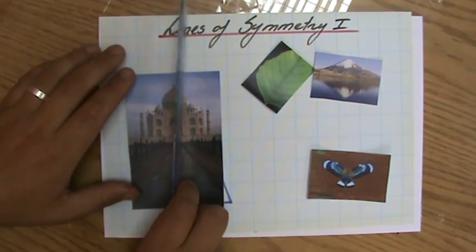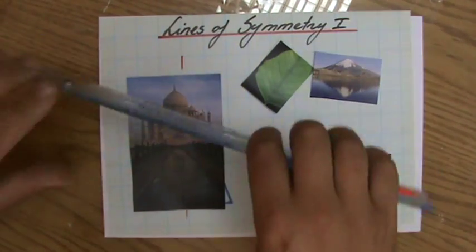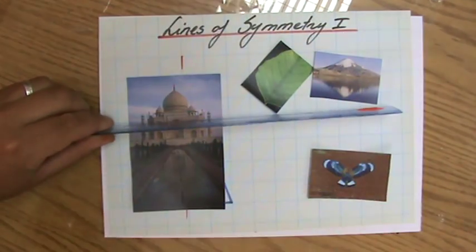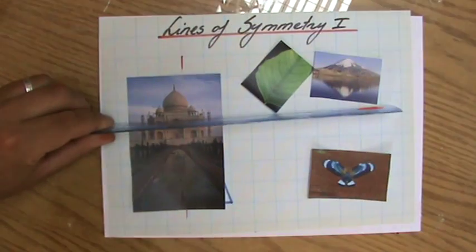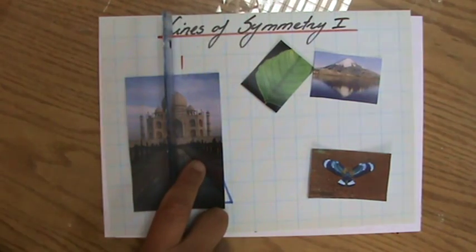So you have all sorts of lines of symmetry, where the right side has to be the same as the left side. Is this a line of symmetry? No, it's not, because the top is not the same as the bottom. So on each side of the line of symmetry, it needs to be identical.